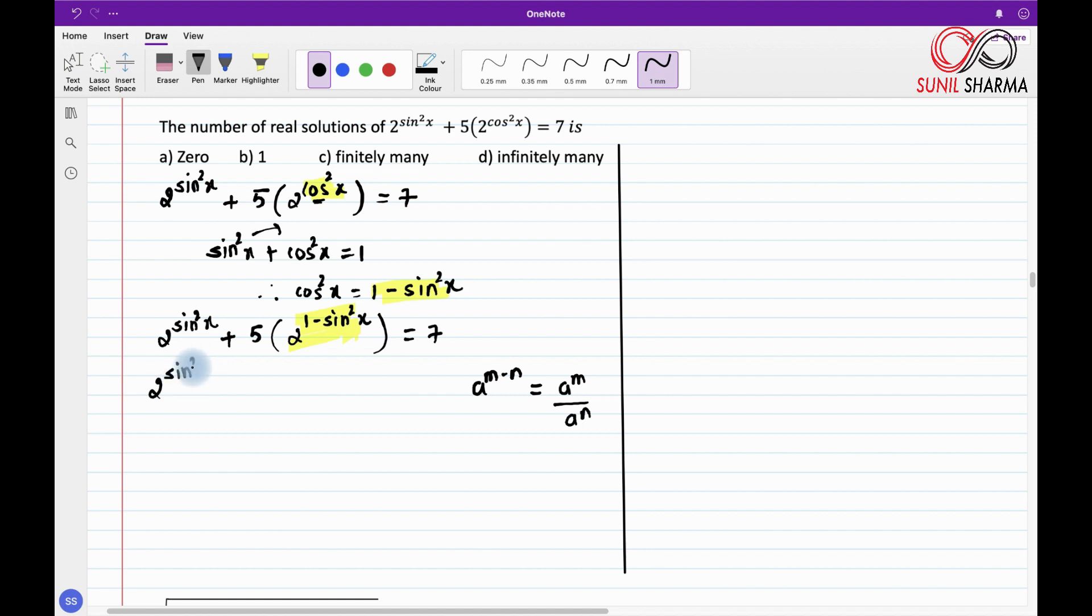So 2^(sin²x) will remain as it is plus 5 times, I can write this as 2^1 upon 2^(sin²x) using this property in indices.